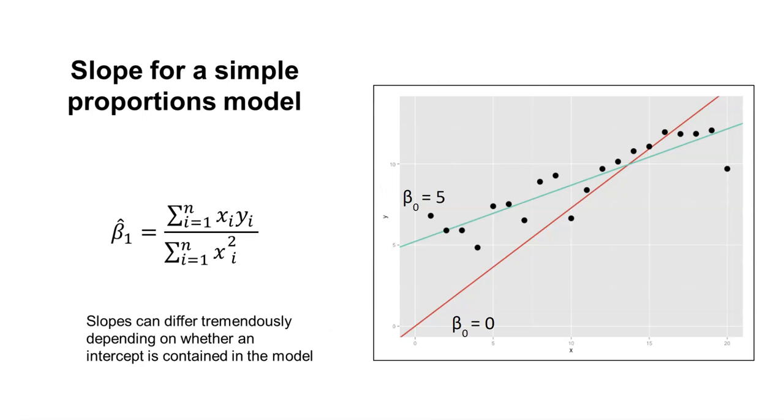Here's what I mean by the slope for a simple proportions model. If we had the data, we could calculate this by taking each x value, multiplying it by each y value, and summing that up. In the denominator, take each x value and square it, and sum that up for the data set.